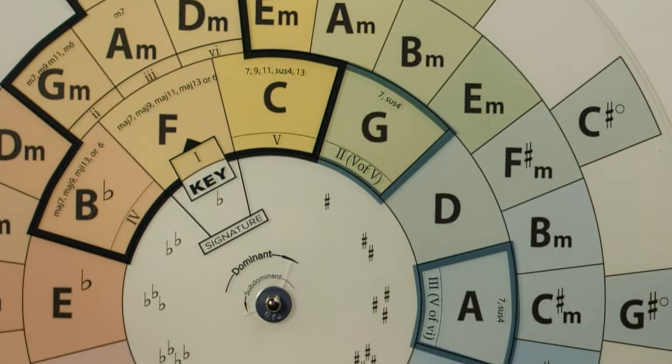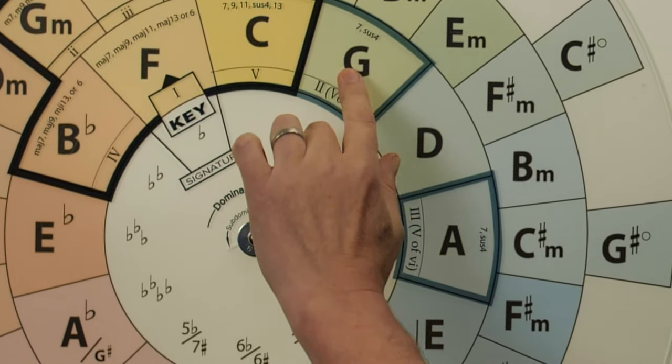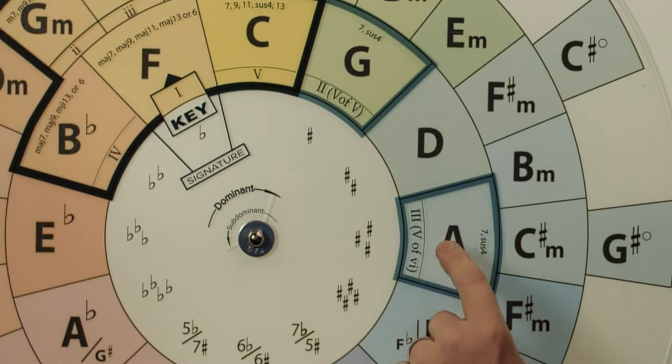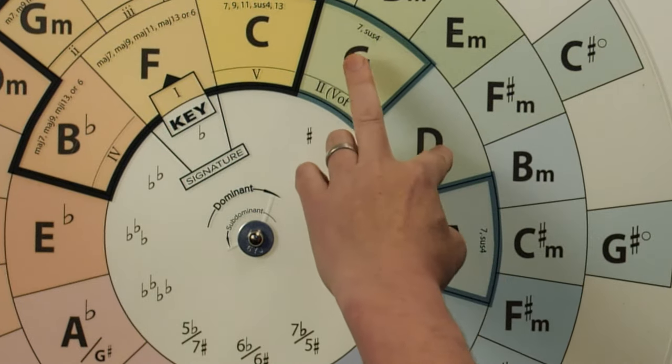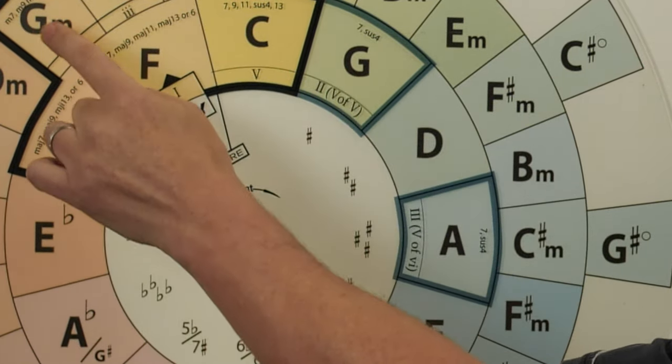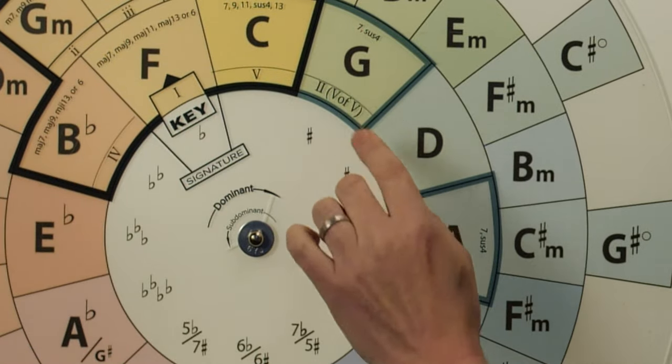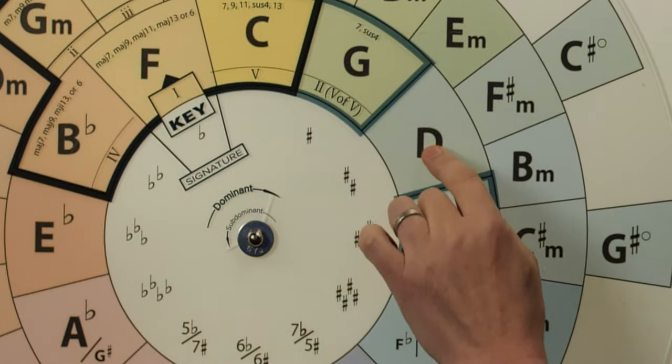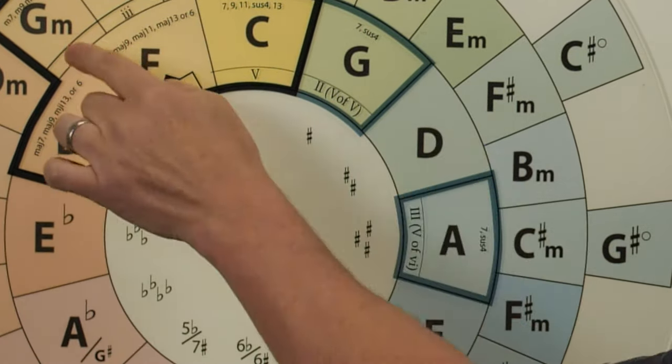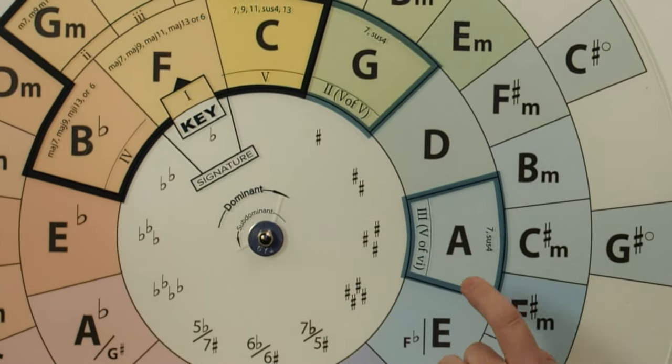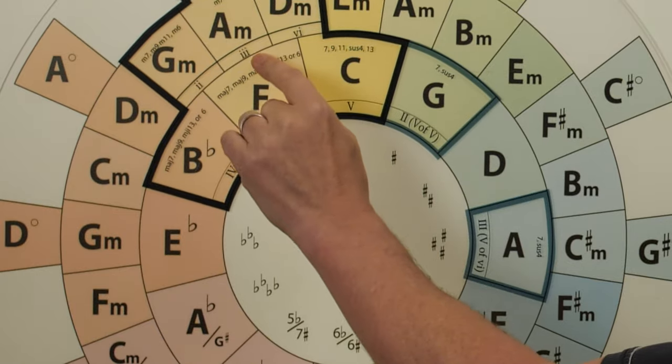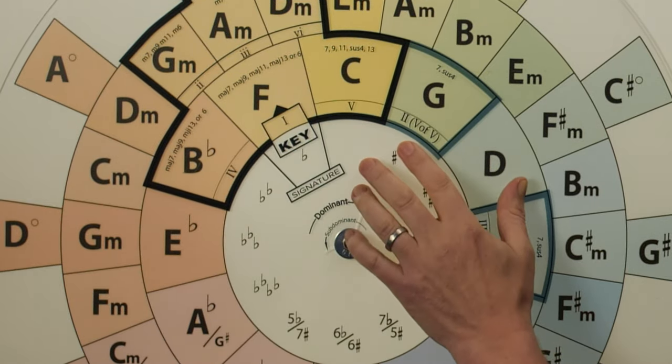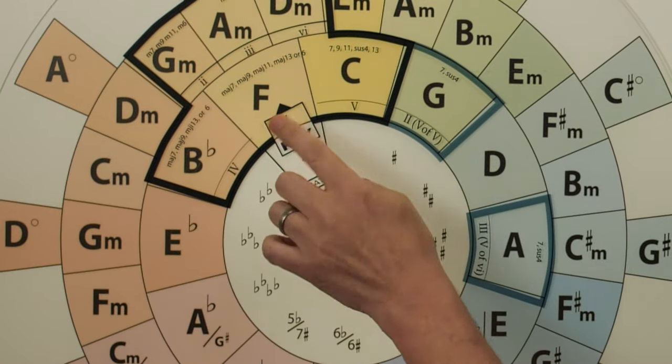The five secondary dominant chords, the V of V is a G7. The V of VI is an A7. The D7, which is the secondary dominant for the G minor, because it's a G. So D7 would be five of two. The E7, five of the A. The E7 would be the five of three. And then the hidden secondary dominant, F7, the five of four.